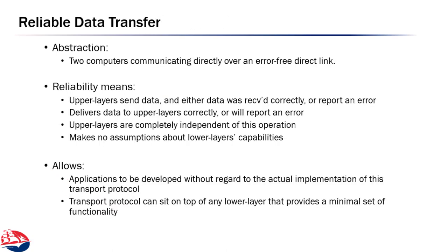So if TCP is going to be a reliable protocol, how do we get reliability when we have an unreliable network underneath us? What we really want is an abstraction — an imaginary error-free network where two computers are talking directly to one another without any errors, overhead, or anything in between. That's what application programmers really want. But that's not the reality, and so we want to make this abstraction work while understanding we'll have to do some work in the network stack.